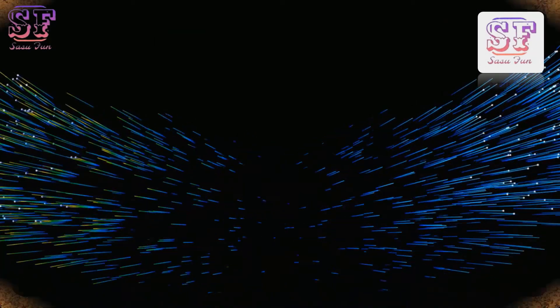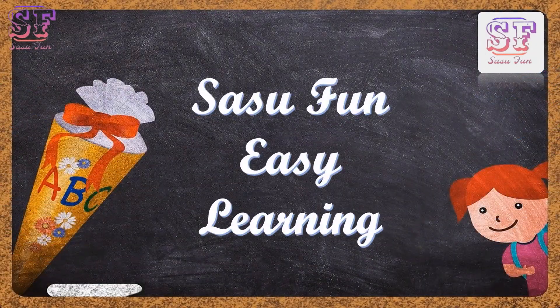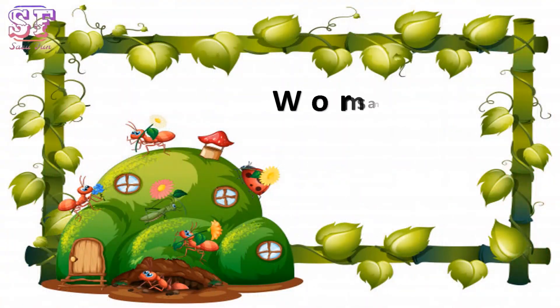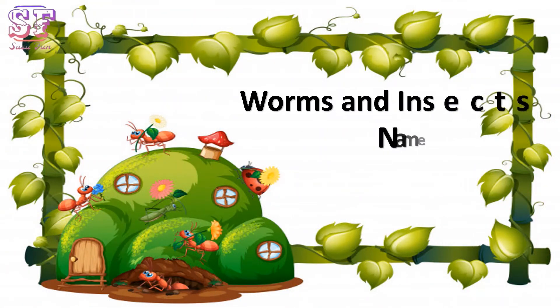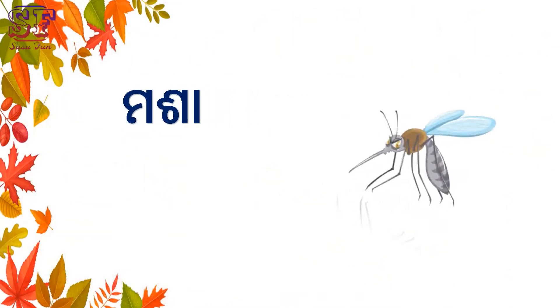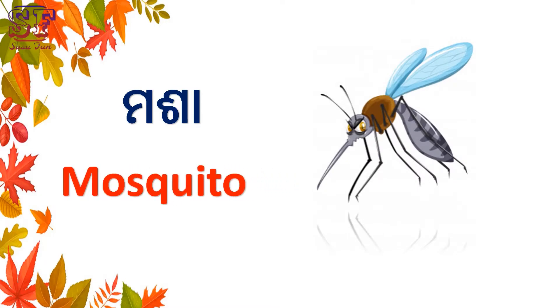Hello children, welcome to Sasufan Easy Learning. Today we are going to learn about worms and insects names in Urdu and English. So let's start the class. Mossa - mosquito, mosquito.